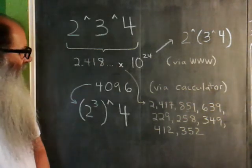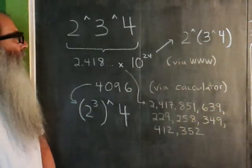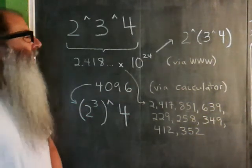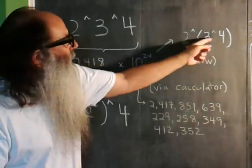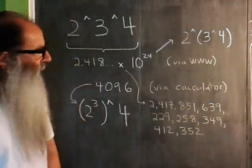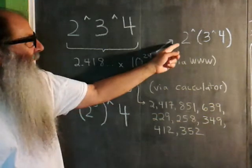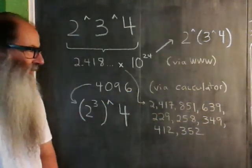And it has to do with grouping. In the computing world, it seems as though the 4 binds with the 3. So you take 3 to the 4th, which happens to be 81, and then you take 2 raised to the 81st power. And that ends up being this large number.